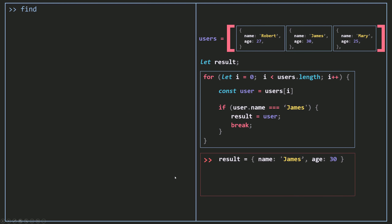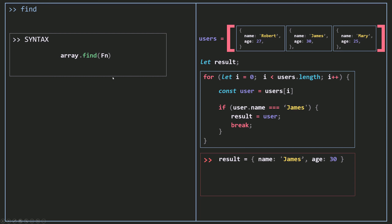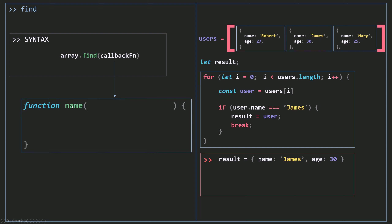Now let's see how find works. For the syntax, you want to call find on your array and pass in a function. This function will be called by find on each element, one by one, and will check if each element satisfies the condition or not. When my function returns false, find will go to the next one. If my function returns true, then that element is going to be the found element. Because I'm passing a function to another function, we call this a callback function.